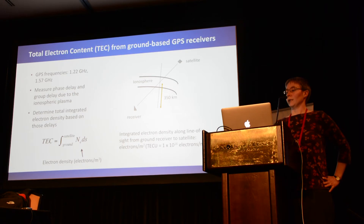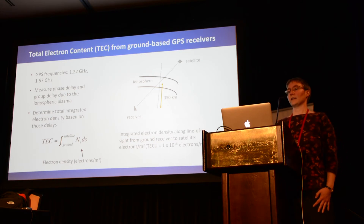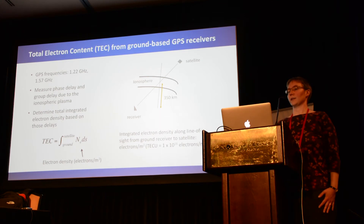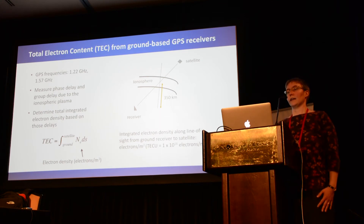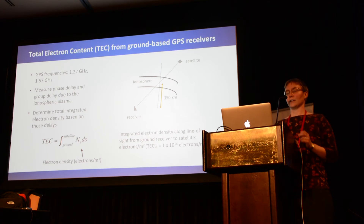It is often easier to think in terms of vertical total electron content. We map the slant TEC along the ray to a vertical line of sight that intersects the line of sight between receiver and satellite at the region of peak electron density, typically around 350 kilometers altitude. This allows us to give our measurement a location in space.